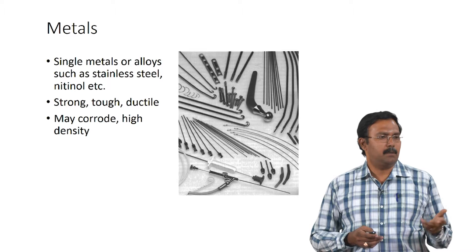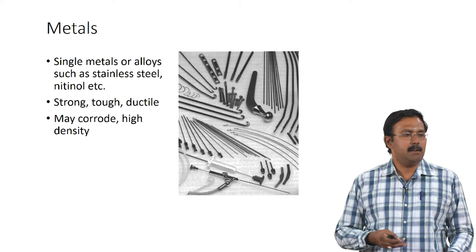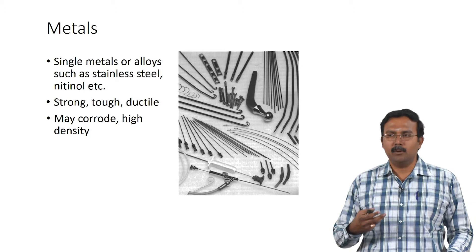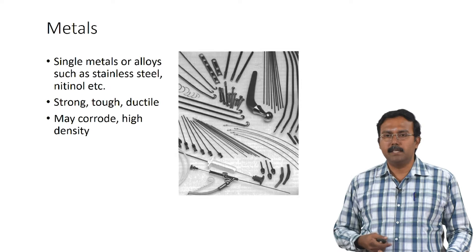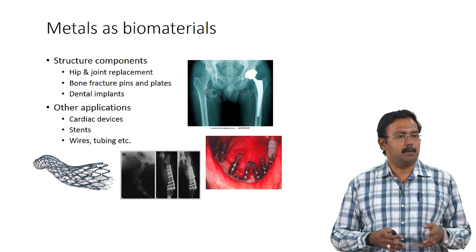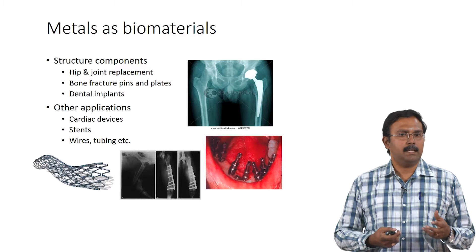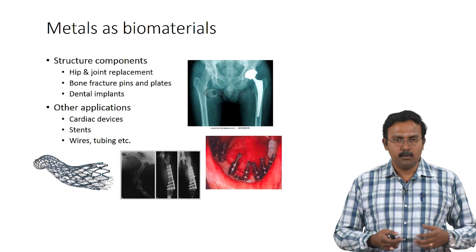Metals can either be a single metal or alloy. Examples of alloys used in biomedical applications include stainless steel and nitinol. The advantage is they are strong, tough, and ductile. However, the disadvantage is they may corrode and usually have very high density, which could mean discomfort for a patient when implanted. Metals are used for structural components like hip and joint replacements, bone fracture pins and plates, dental implants, cardiac devices, stents, wires, and tubing.